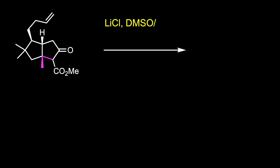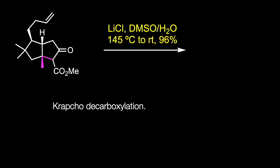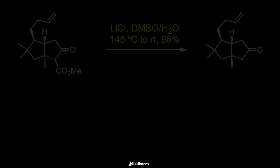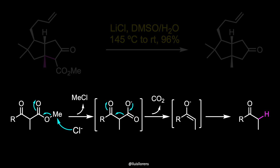The beta-ketoester was then subjected to Krapcho decarboxylation conditions with lithium chloride in wet DMSO. The Krapcho reaction allows the hydrolysis and decarboxylation of activated esters. In the reaction, the halide attacks the alkyl group of the ester in an SN2 fashion; subsequent decarboxylation results in the formation of an enolate that is quenched by water.